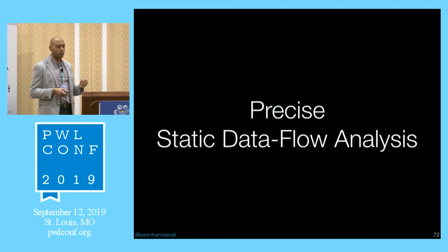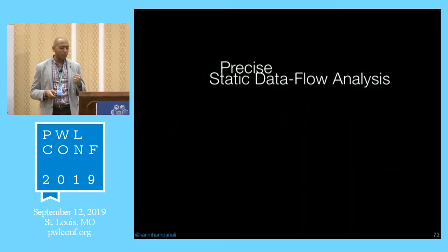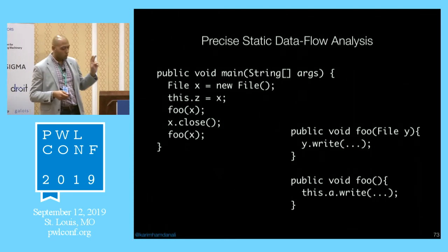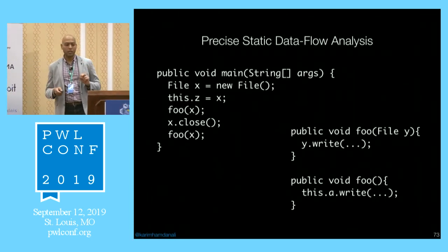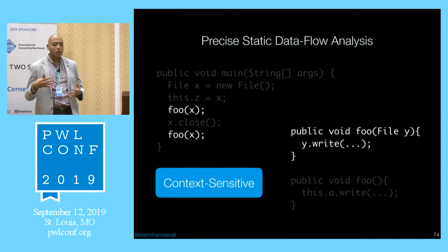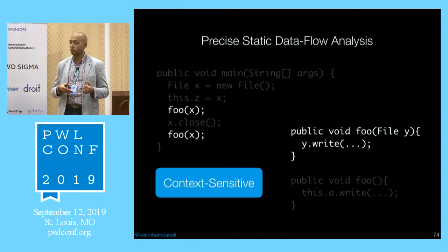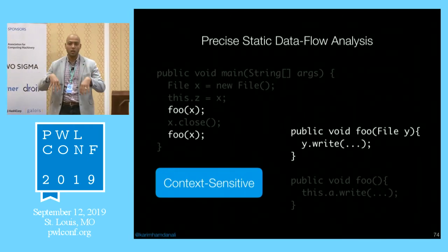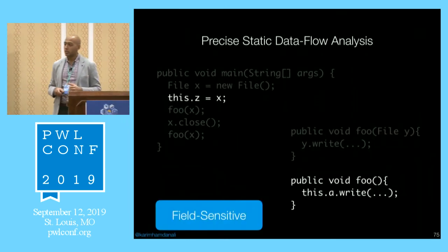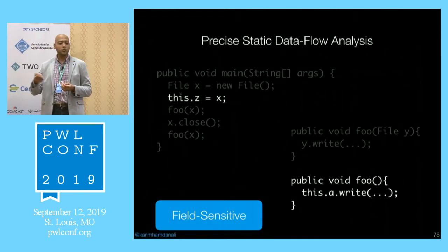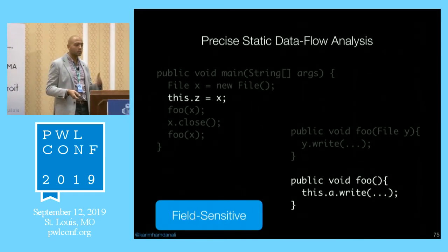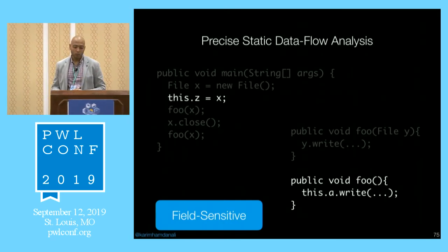All these security analysis types are basically static data flow analyses, but we need them to be precise. To have a precise static data flow analysis, you need two properties. First, context sensitivity — the analysis must differentiate between calls to the same method from different locations, each with its own context based on variables and arguments. Second, field sensitivity — the analysis must differentiate between accesses to different fields on the same object and not treat them all the same.